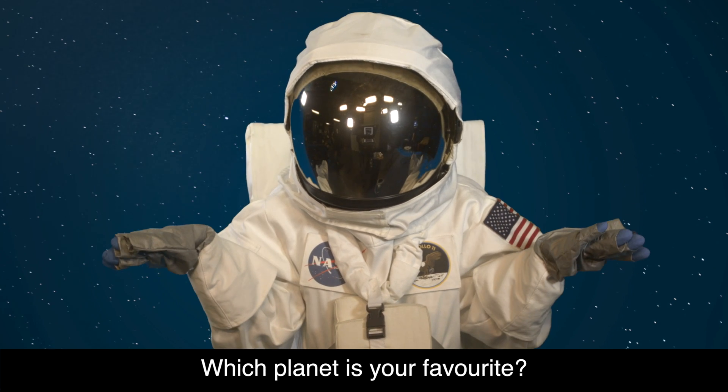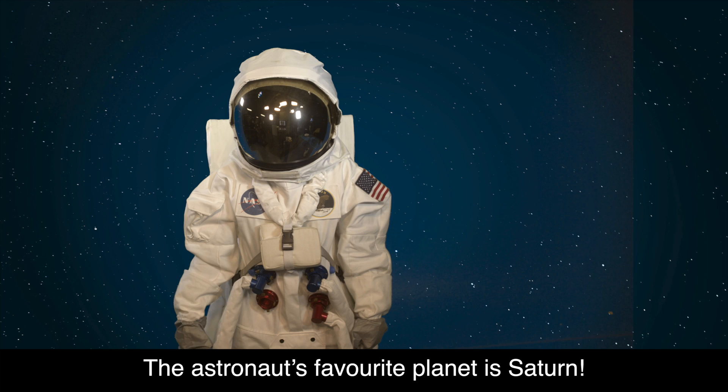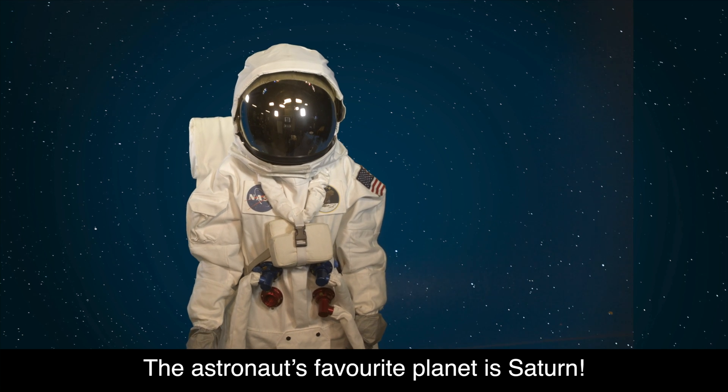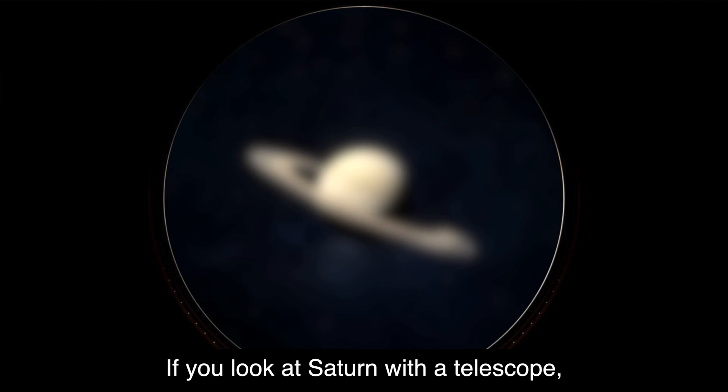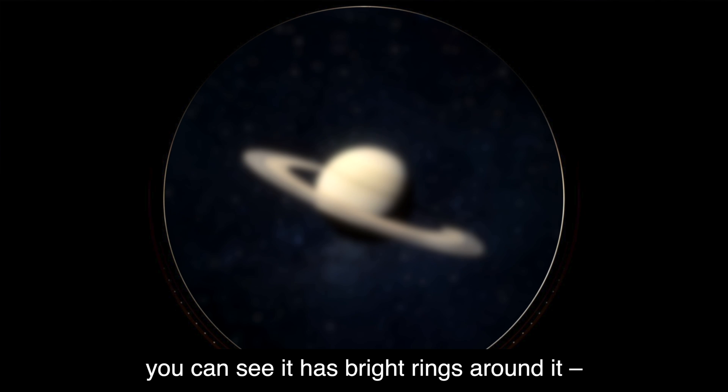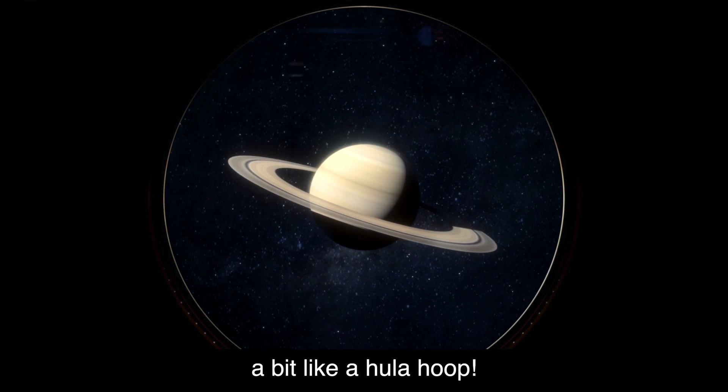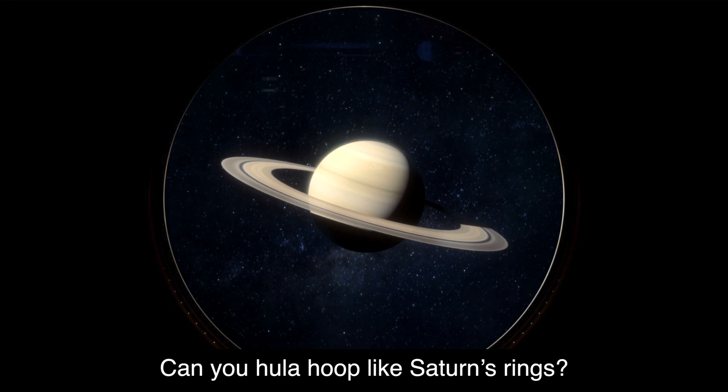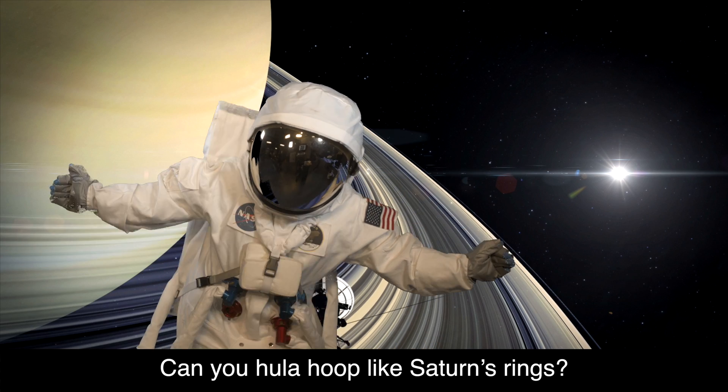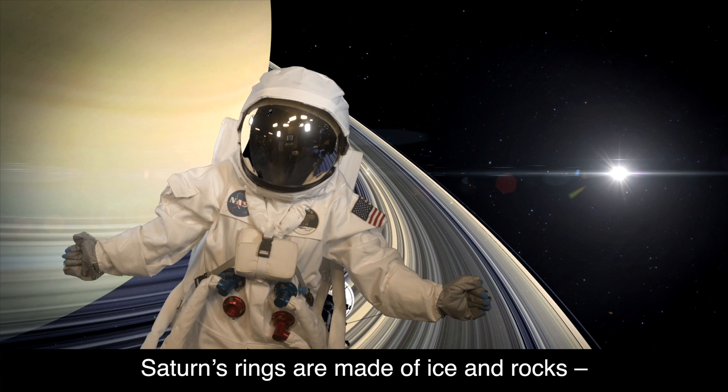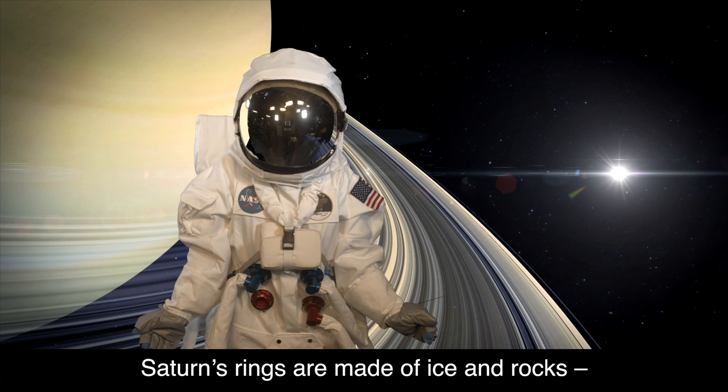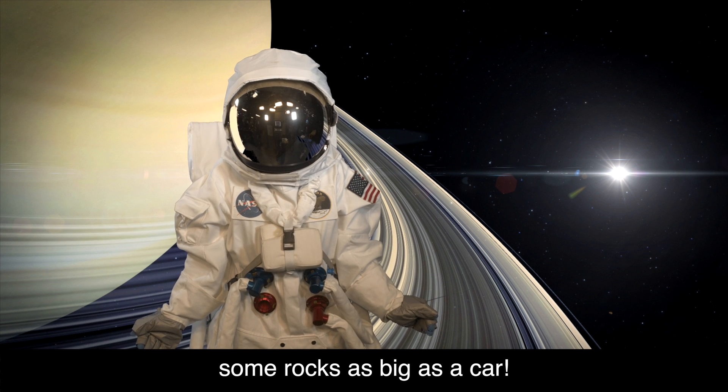Which planet is your favourite? The astronaut's favourite planet is Saturn. If you look at Saturn with a telescope, you can see it has bright rings around it. A bit like a hula hoop. Can you hula hoop like Saturn's rings? Saturn's rings are made of ice and rocks. Some rocks as big as a car.